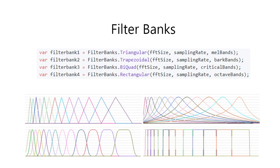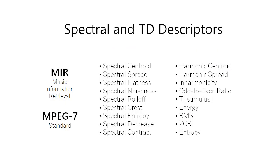There are also extractors for spectral and time domain descriptors introduced in the field of music information retrieval and defined by MPEG-7 standard, such as spectral centroid, flatness, roll-off, entropy, harmonic spectral features, etc. You can specify any subset of these descriptors for computation.